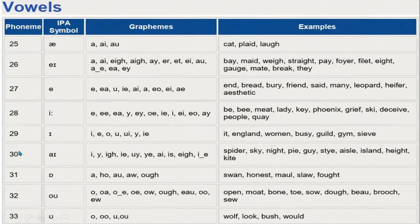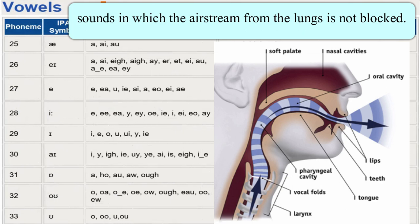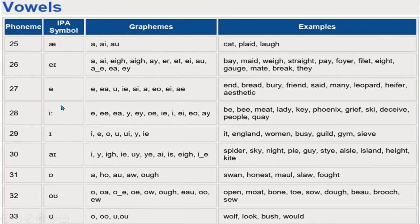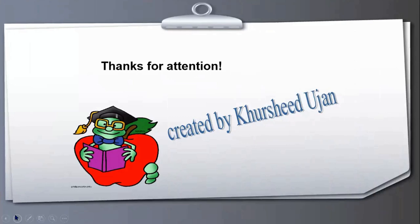Vowel sounds are sounds in which the air stream from the lungs is not blocked — the mouth remains open while pronouncing vowel phonemes. These are the IPA symbols for vowel phonemes, along with their corresponding graphemes and example words. Together, the consonant and vowel phonemes make up all 44 IPA symbols in English. Thank you very much for your attention — hopefully this has been very helpful. Assalamualaikum.